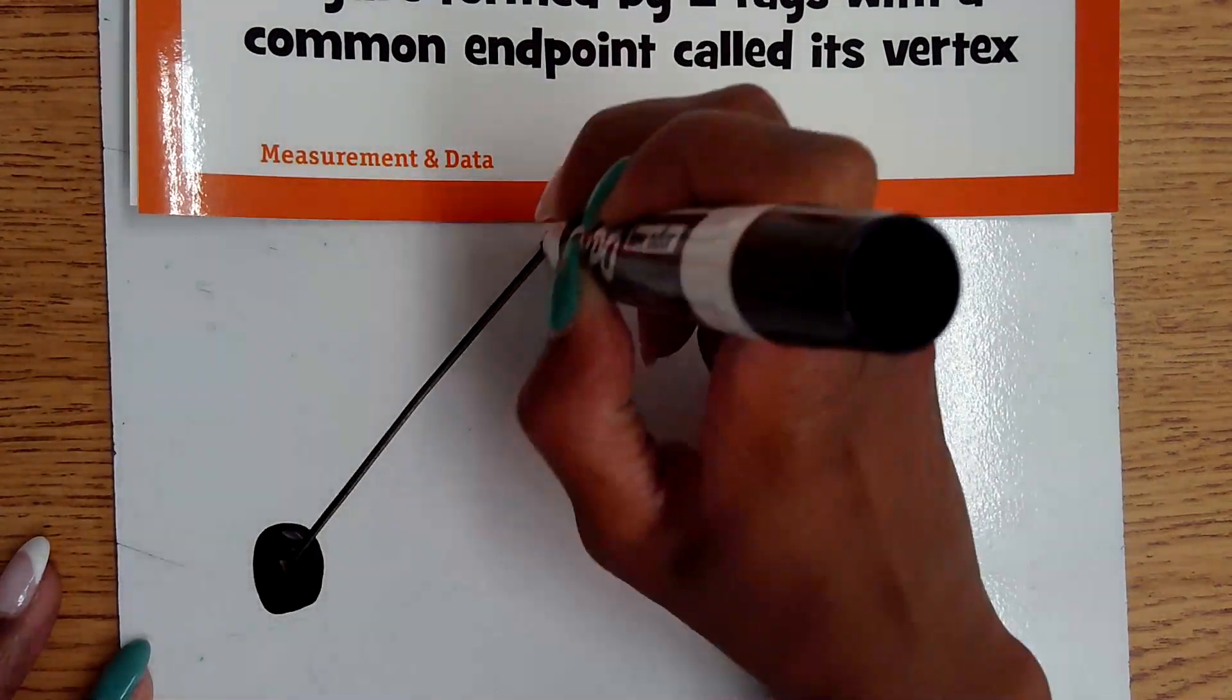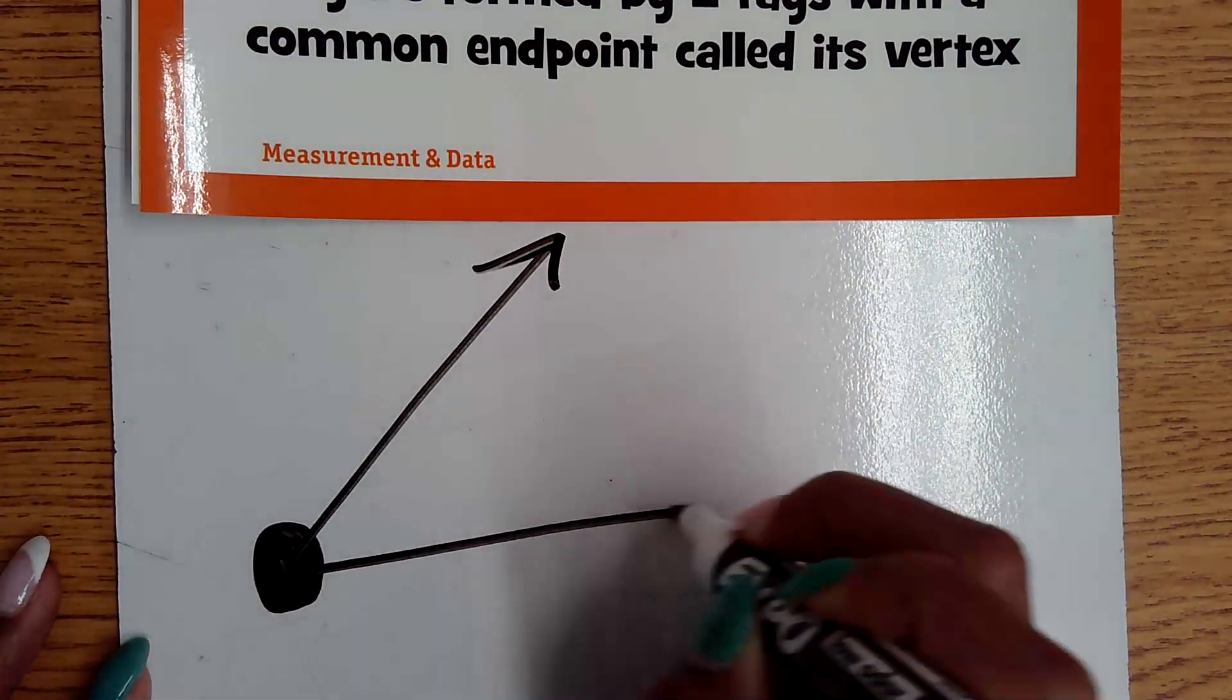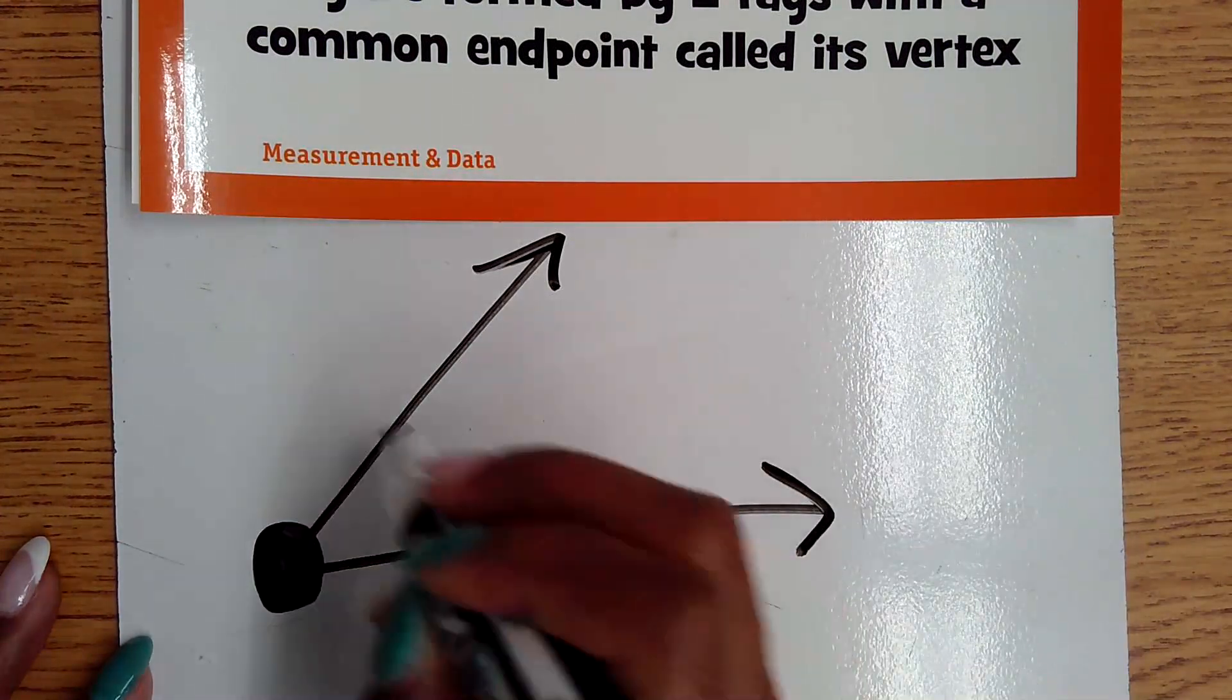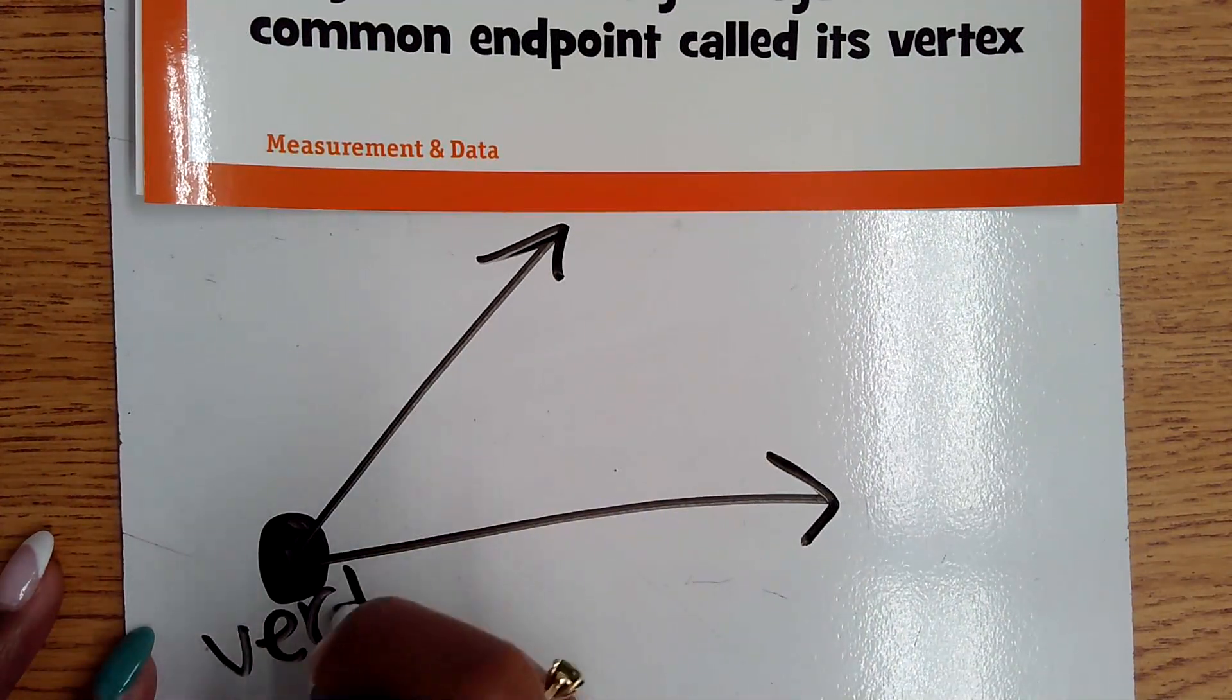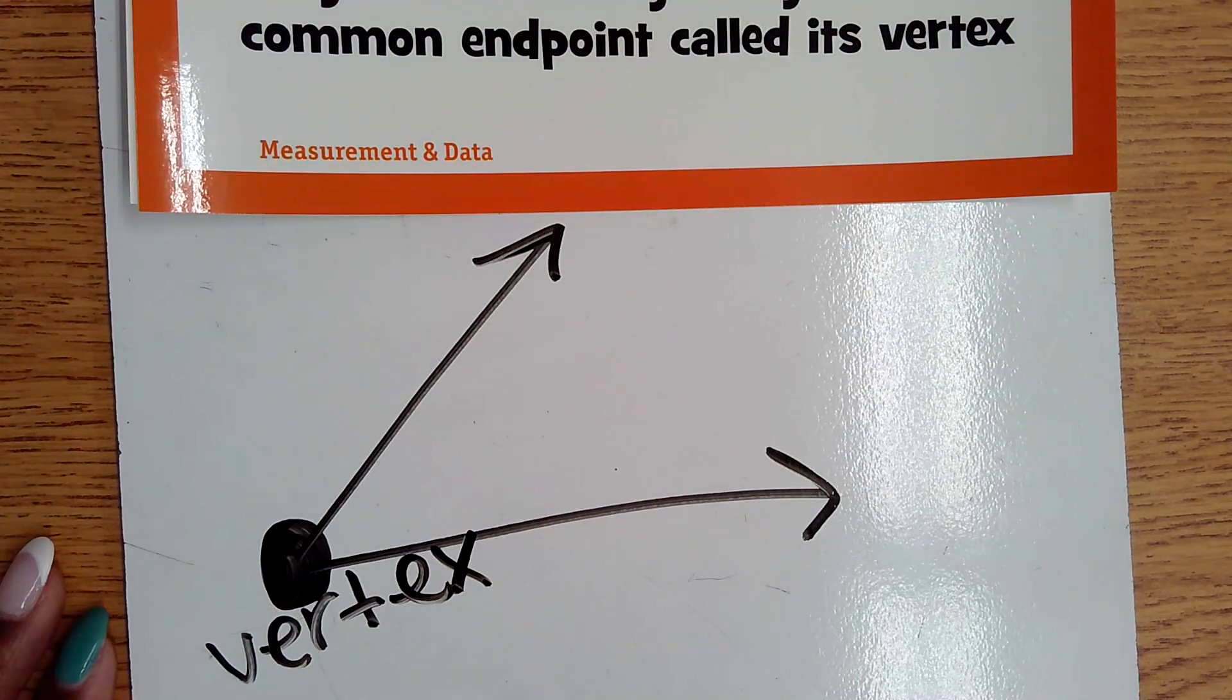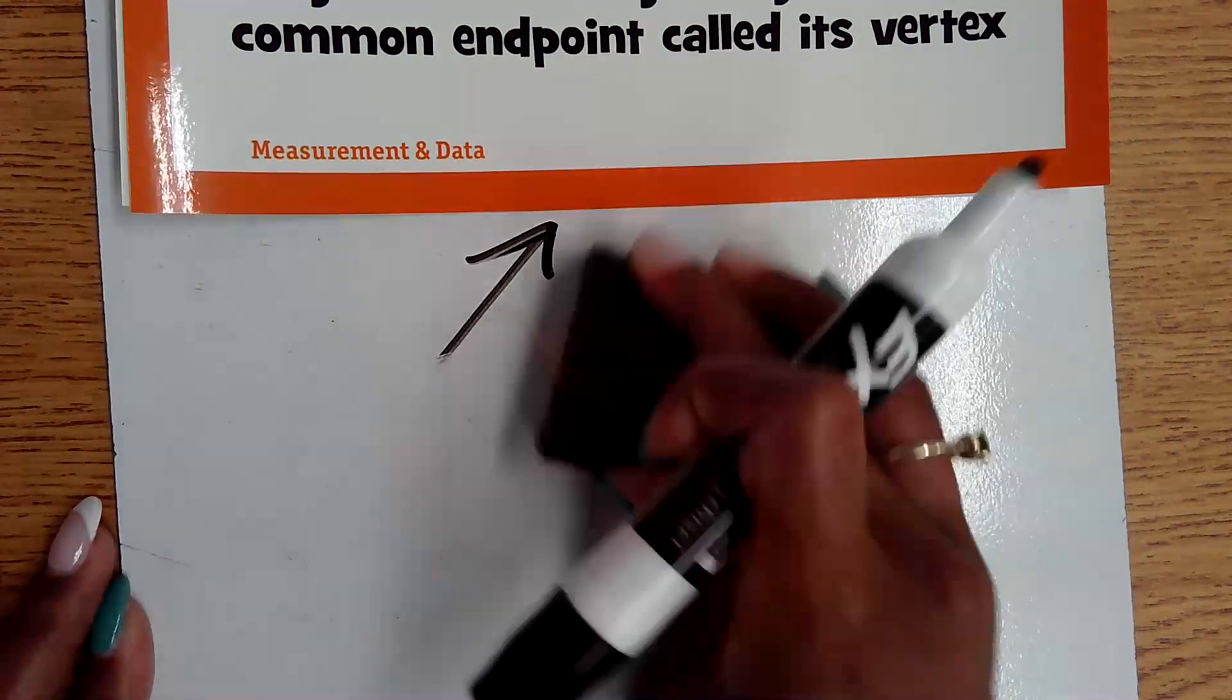They have a common endpoint, which means if one goes in that direction, the other is going to go in that direction. This common point right here is going to be called our vertex, and that is what makes our angle.